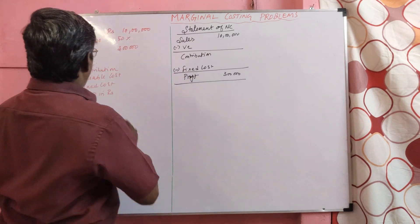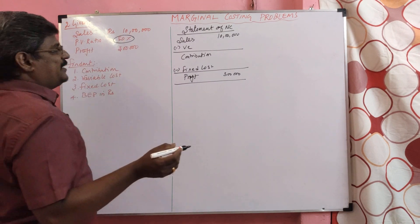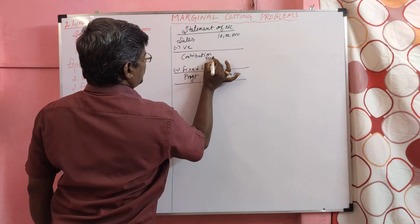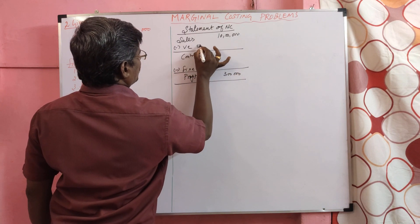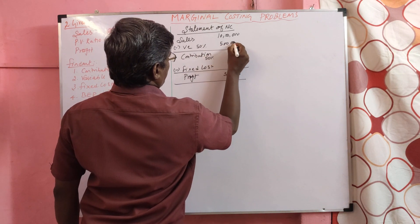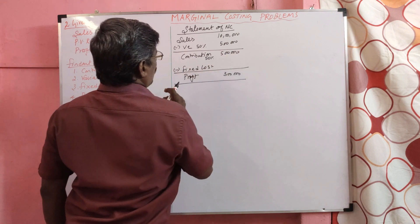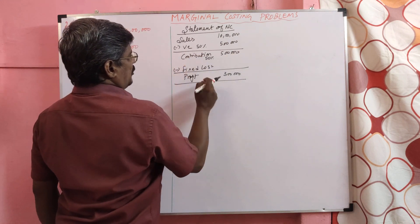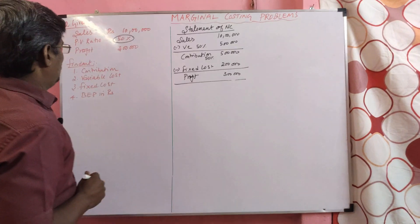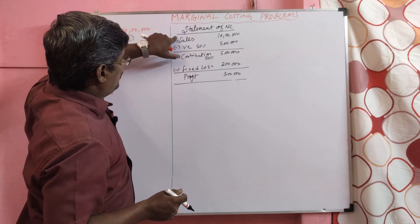Now look at the problem. Profit volume ratio is given. I said many times — profit volume ratio is nothing but contribution. So PVR 50% means variable cost is also 50%. So 10 lakh into 50% equals 5 lakh contribution. Now deduct profit from the contribution to get fixed cost — that is 2 lakh rupees. Once again, sales are given and profit is given.